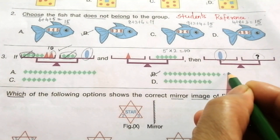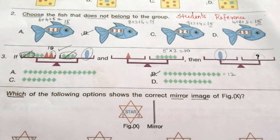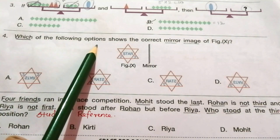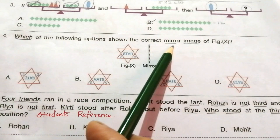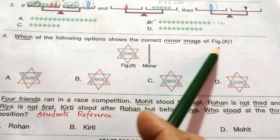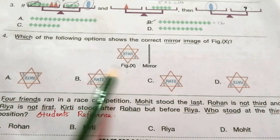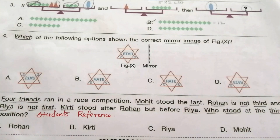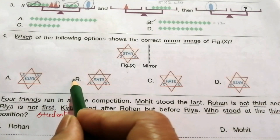Question 4: Which of the following options shows the correct mirror image of figure X? In a mirror image, the right and left sides are interchanged. The correct answer is B.